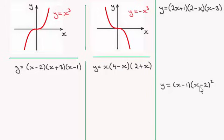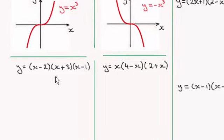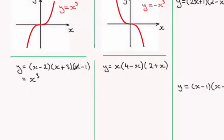The first thing I do is look at what type of term we've got for x cubed — is it positive or negative? With this first example, if we take x times x times x, we get a positive x cubed in the expansion. There'll be other terms in the expansion too — an x squared term, an x term, and a constant — but we won't worry about those. So already I know my curve will be starting to come up from the left.